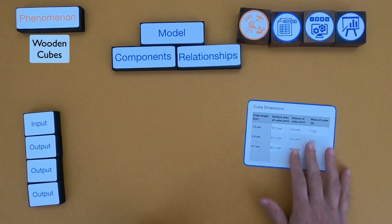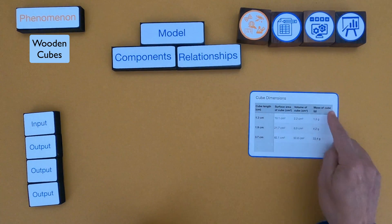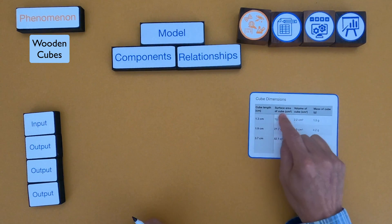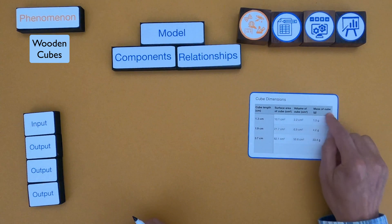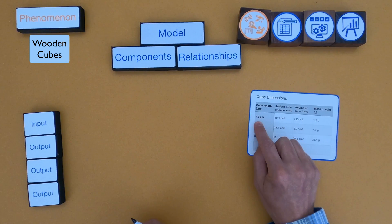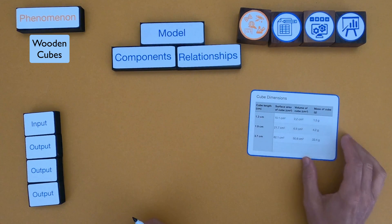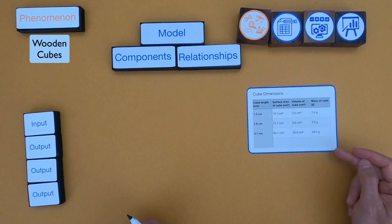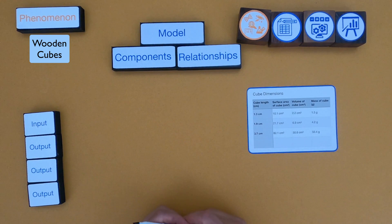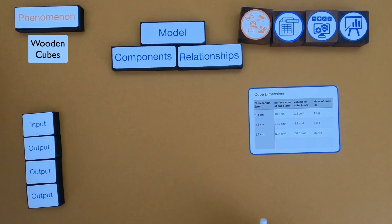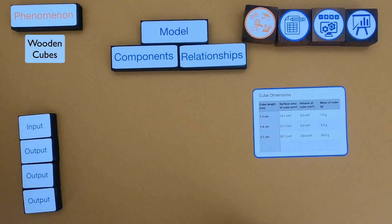The first thing you want to figure out is what are all the components you might want to include in your model. I've got the cube length that I could measure with a ruler, and I could calculate some other values as well. Let's say I don't want to mass every cube — I just want the model to figure that out. So the first thing I identify in my model is what are all the components within my model.